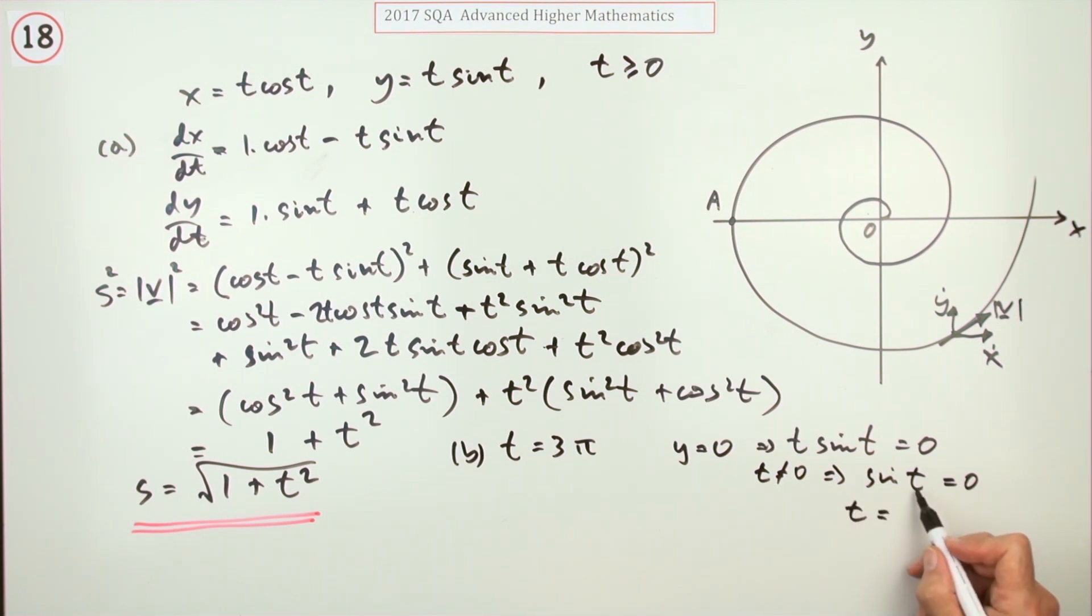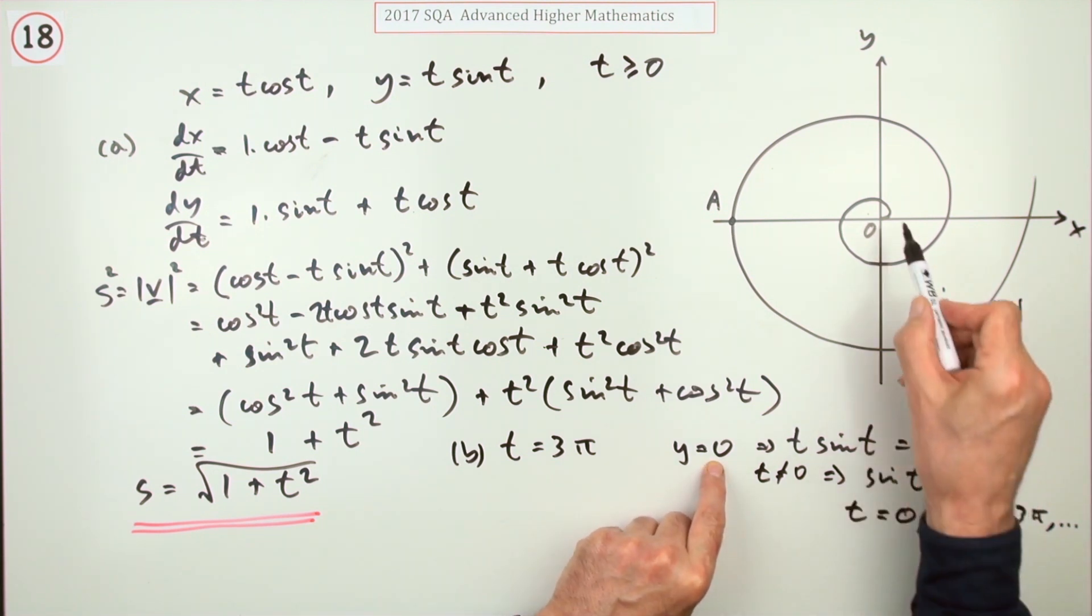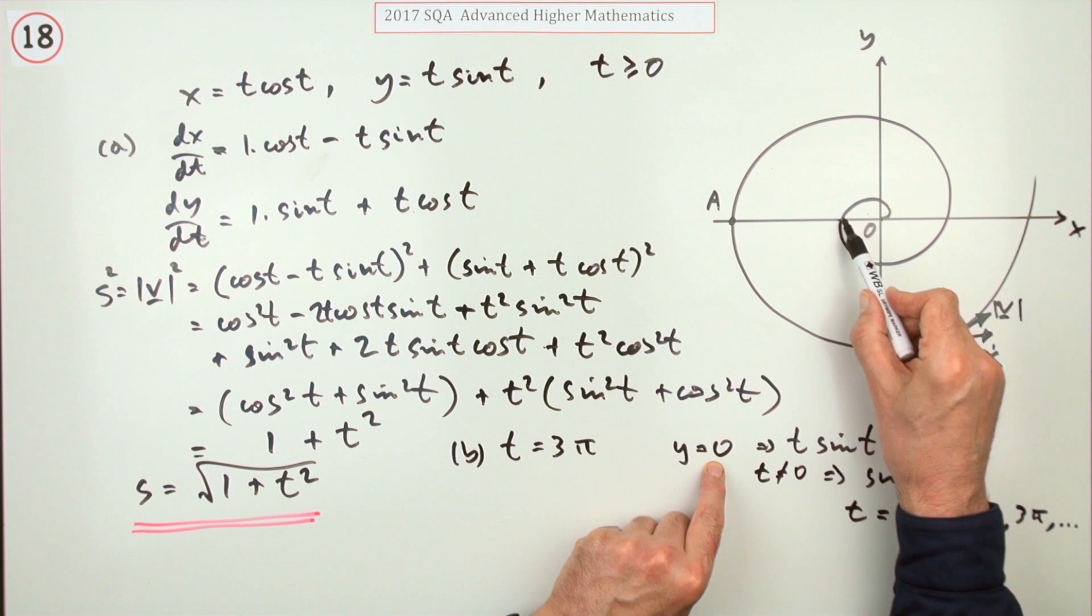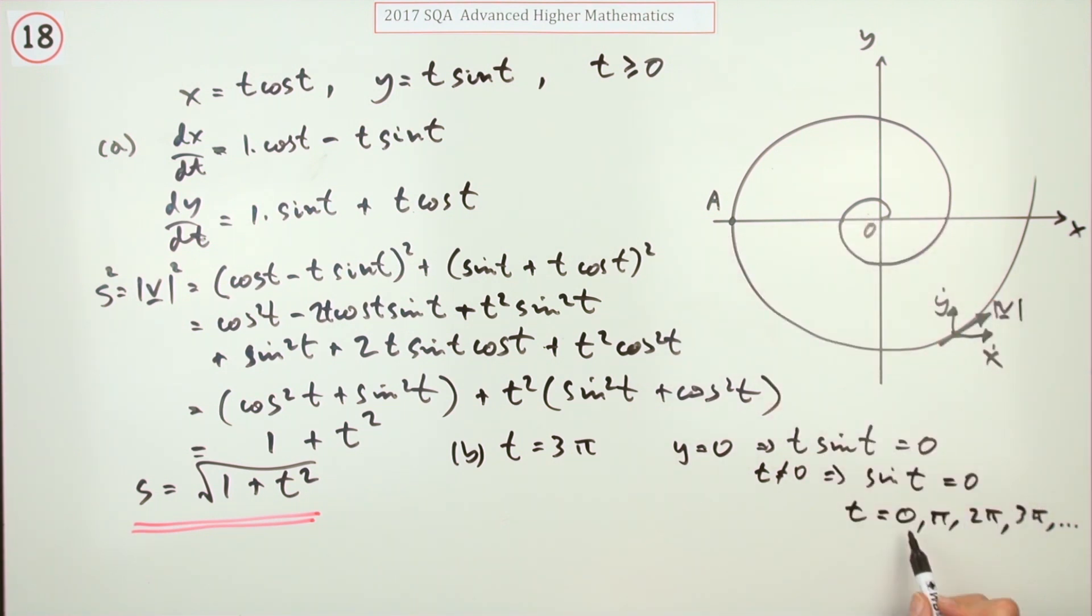So sine t is zero, which means t is either equal to zero, π, 2π, 3π, and so on. You could just count off how many times y was zero—one, two, three, four—it's the fourth time, which means t equals 3π, same as before.